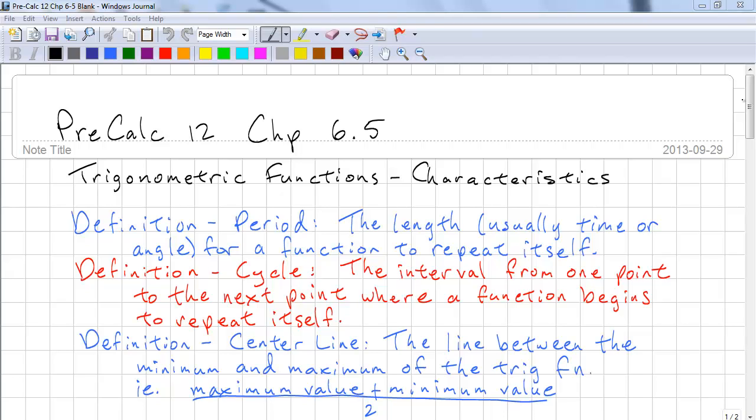The first definition is period. This is the length, usually measured in time, for a function to repeat itself. Our next definition is cycle. This is the interval from one point to the next point where the function begins to repeat itself.